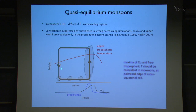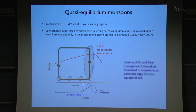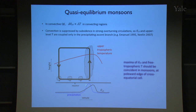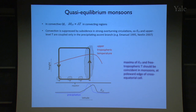In the subsiding branch of the circulation, which occupies most of the domain, deep convection is suppressed and the free troposphere is warmed adiabatically, just as it's cooled adiabatically in ascending regions. So the area where boundary layer θE is coupled to free tropospheric temperature is limited to convecting regions near the ascending branch. In the rest of the domain, free tropospheric temperature is warmer than boundary layer θE.